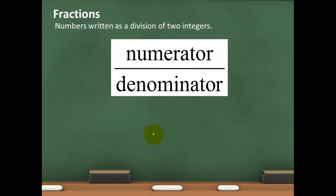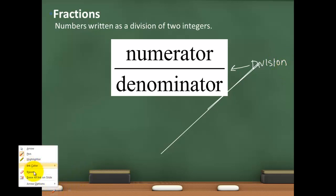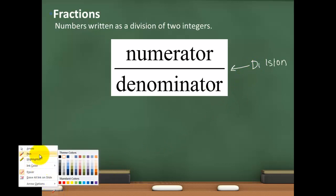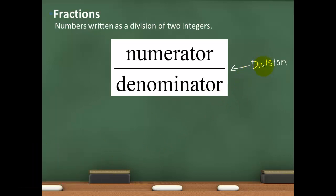We're going to use prime factorization in just a second. But first I want to get into what a fraction is. One simple definition: a fraction is numbers written as a division of two integers. We represent the division with a horizontal bar. The number on top is called our numerator, and the number on the bottom is our denominator — a good way to remember is that denominator starts with D and it is down under.